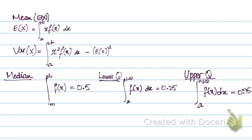This is how you find your quartiles, the median, the lower quartile, and the upper quartile. In summary, for continuous probability distributions we learned how to calculate the mean, variance, median, and quartiles. The total area under the curve is always 1, and since probabilities are never negative, the function always lies in the first quadrant where both x and y are positive.